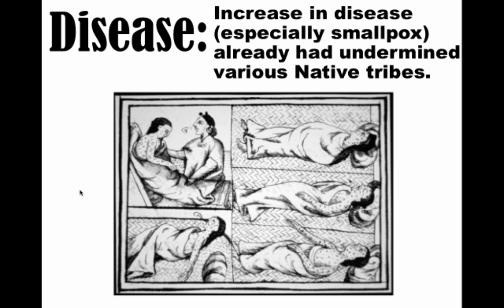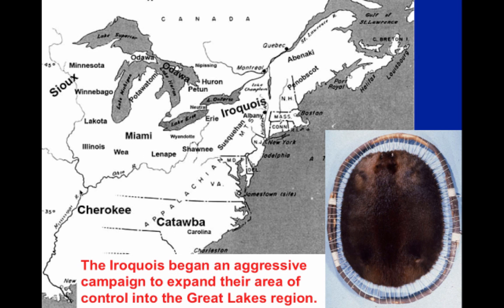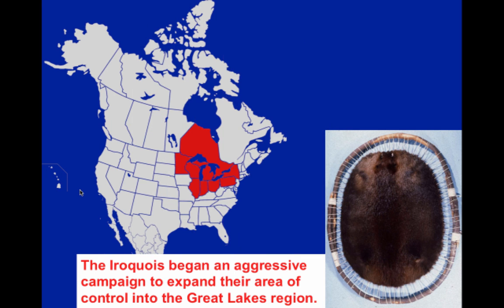With all these different factors combining, the situation is about to go down. The Iroquois tribe, at the encouragement of the Dutch, begin an aggressive campaign to expand their hunting grounds. They start heading up into the Great Lakes region, looking for new beaver populations to hunt and bring back to the colony of New Netherlands. The Dutch are encouraging this to get profit, but also because it puts the Iroquois into competition with the French and their native allies, the Huron tribe.